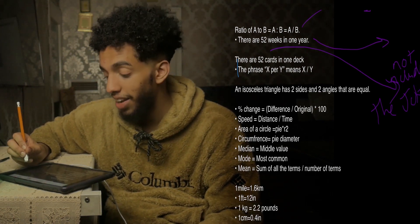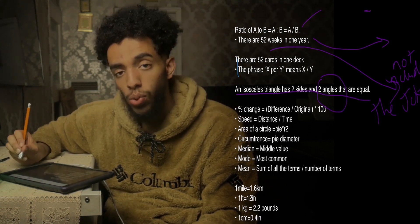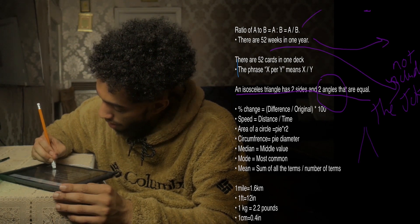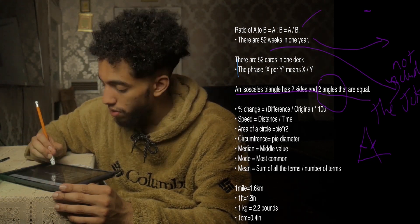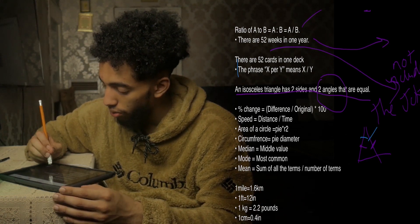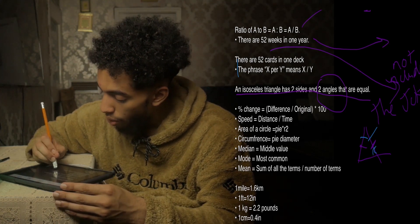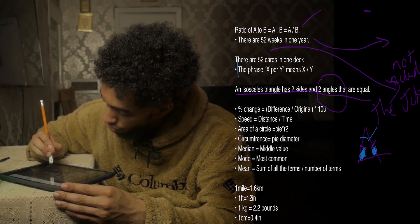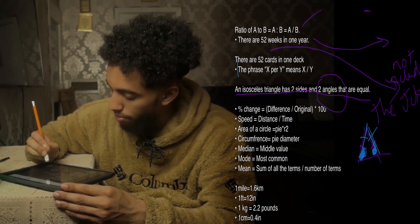An isosceles triangle has two equal sides and two equal base angles. Looking at the diagram: if two lines go perpendicular to the triangle and those two lines are marked as equal in length, it means those two sides are the same. The angles they form with the base — this angle here and this angle here — are also equal. So those two sides and those two base angles are the same.